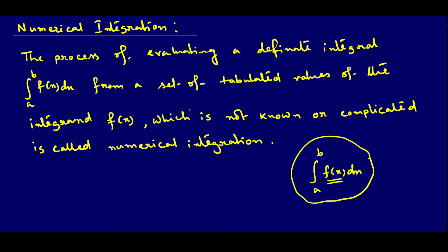In such cases, we can integrate it from a set of tabulated values. We find some intermediate values of f(x), and within the range a to b we integrate it — that particular process is called numerical integration.